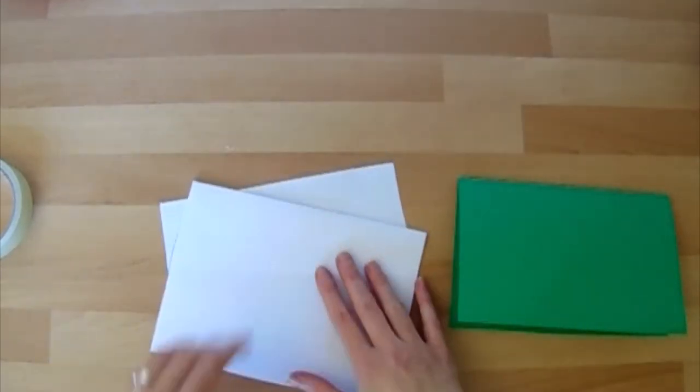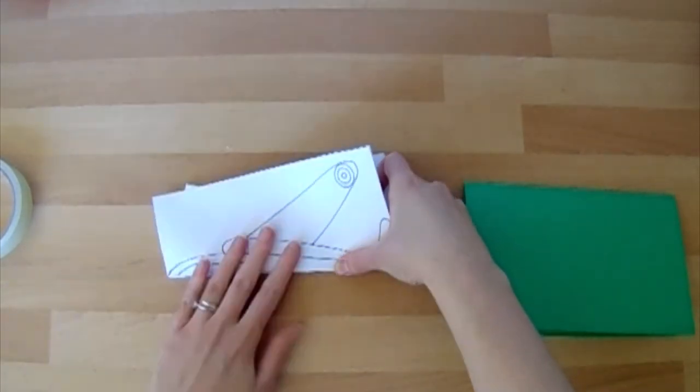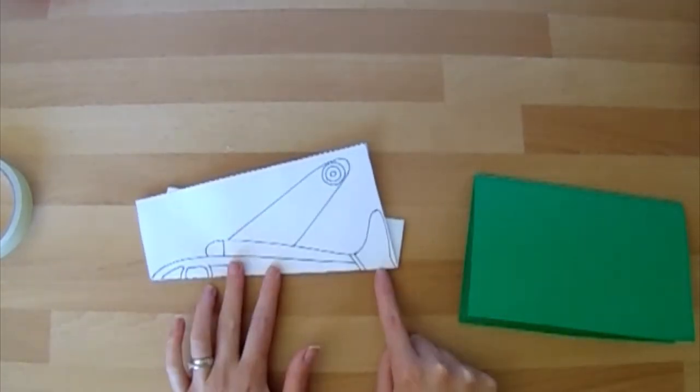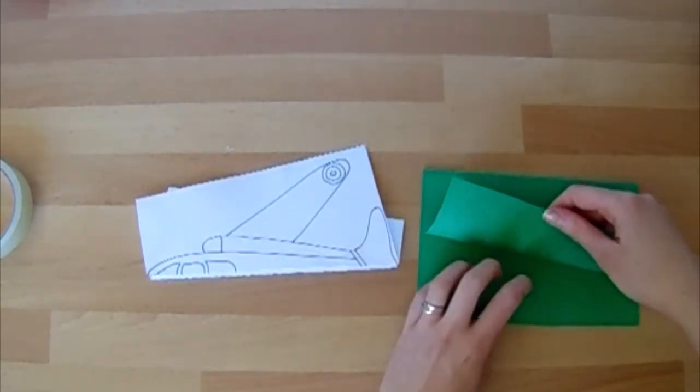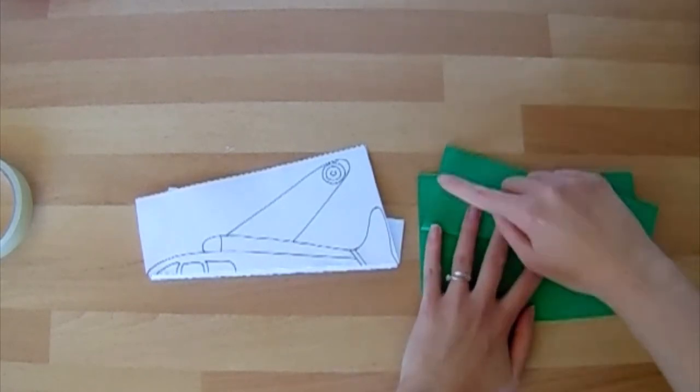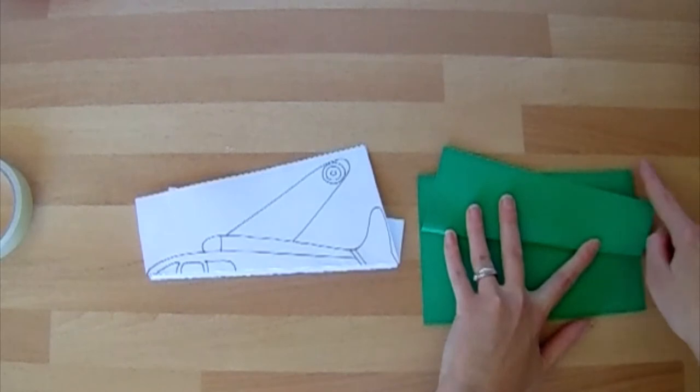And then flip it over and do exactly the same thing on the other side. Now in this one we're going to use the same sort of thing. We're going to fold our card up, and you should see a little triangle here and a little triangle at the top as well.